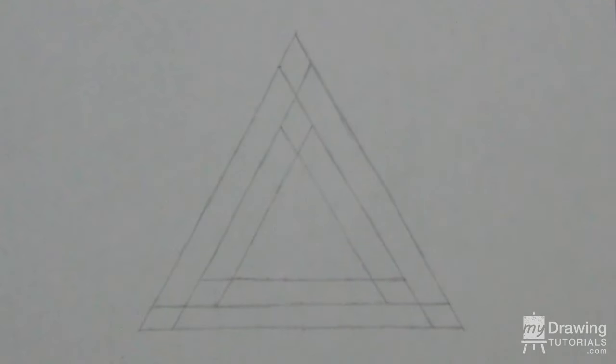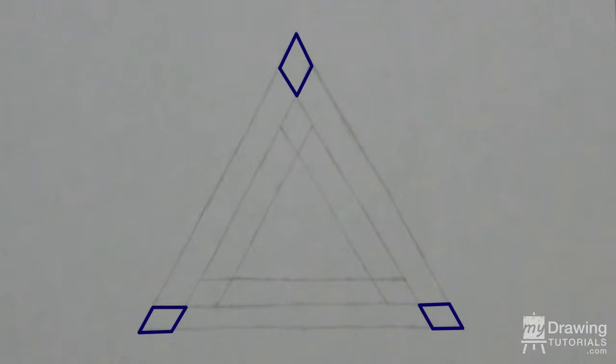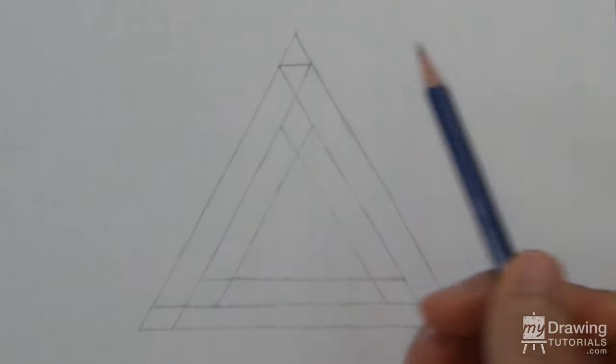Now go to each of the three diamond shapes at the outer corner of your drawing and put a short line through the middle of each.